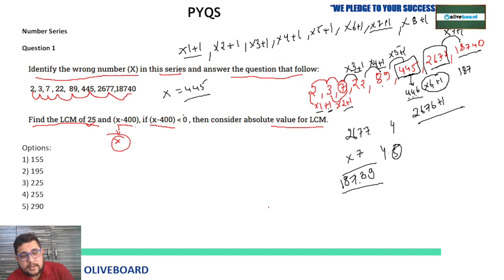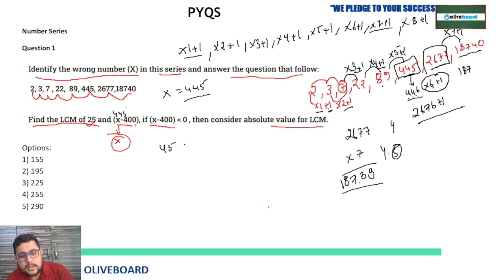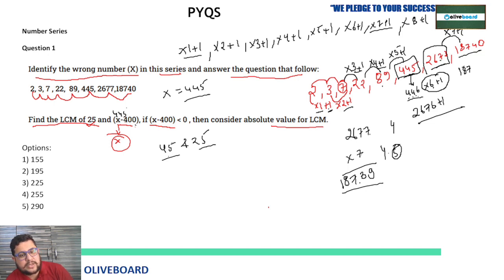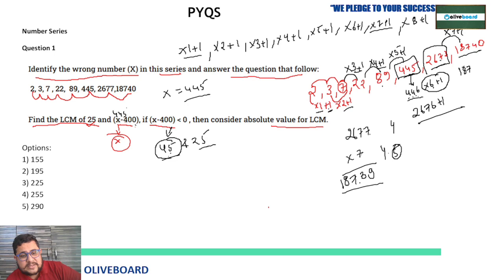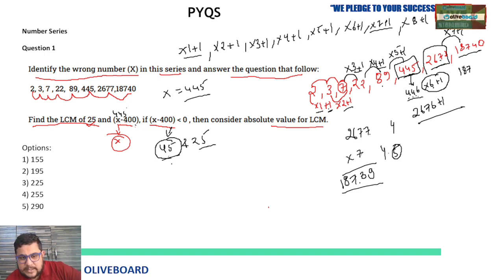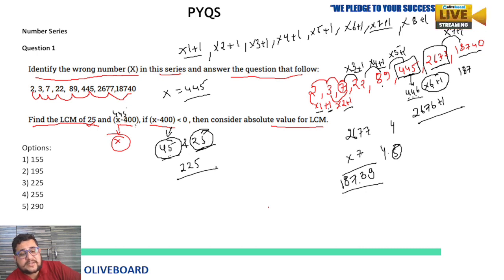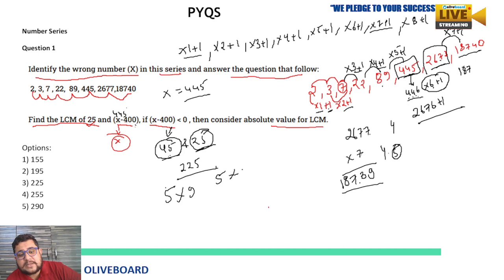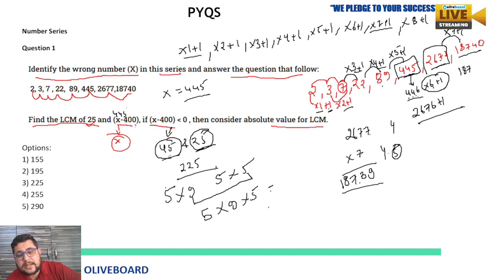The wrong number is 445. Now they ask: find the LCM of 25 and X − 400. So 445 − 400 = 45. We need the LCM of 25 and 45. The larger number is 45; checking its multiples: 45 × 5 = 225, which is divisible by 25. Alternatively: 45 = 5 × 9, 25 = 5 × 5. Taking 5 common: LCM = 5 × 9 × 5 = 225.